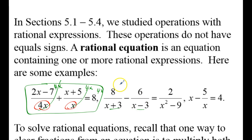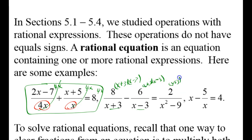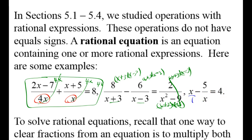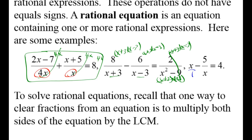Down here, the common denominator that you'd multiply by would be x plus 3 and x minus 3, and then again x plus 3 and x minus 3. And perhaps if you see here, this factors to x plus 3 and x minus 3 so that this will cancel. The whole goal is to multiply through by a common denominator that will eliminate the fraction, and then hopefully all you have left would be a normal algebra 1 equation.